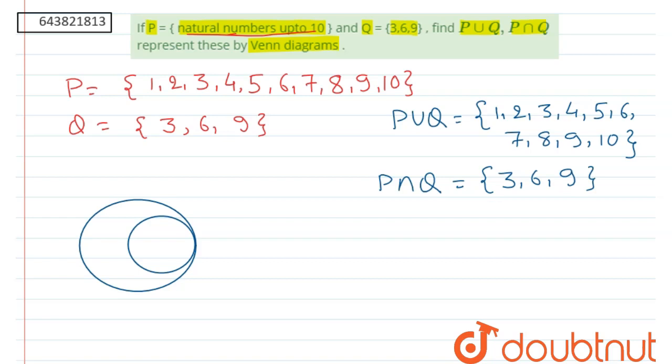Now if we represent bigger circle as set P and a smaller circle as set Q. So set Q has element 3, 6 and 9, and set P has element 1, 2, 3, 4, 5, 6, 7, 8, 9 and 10.